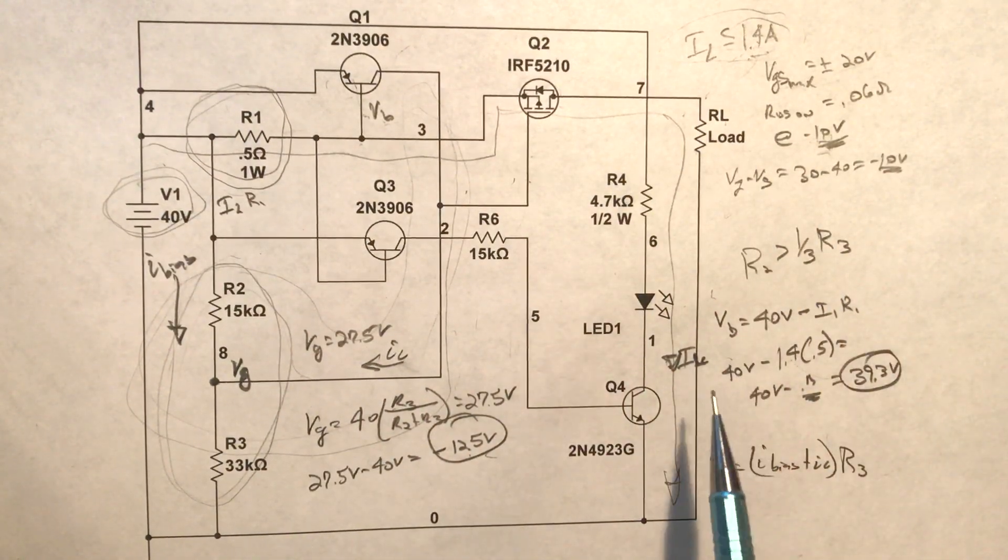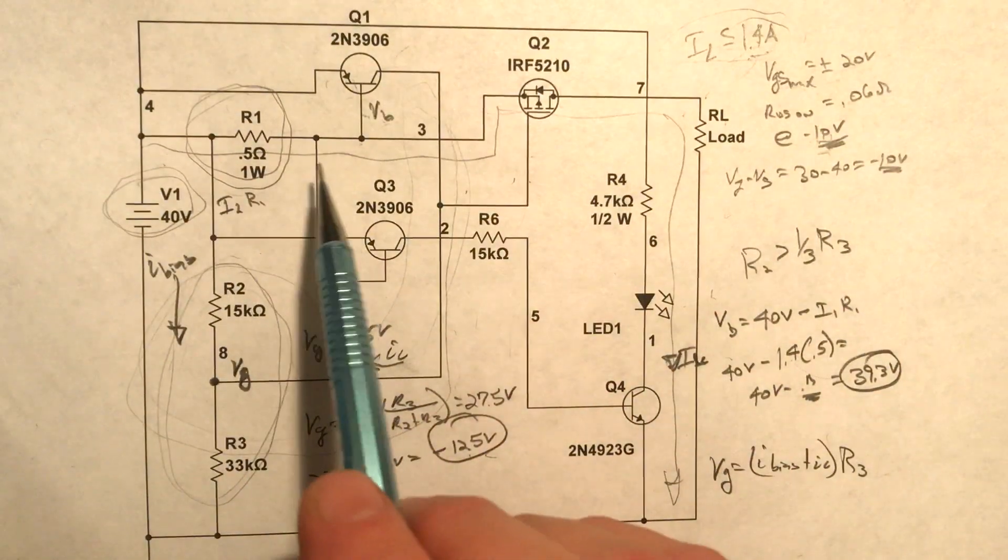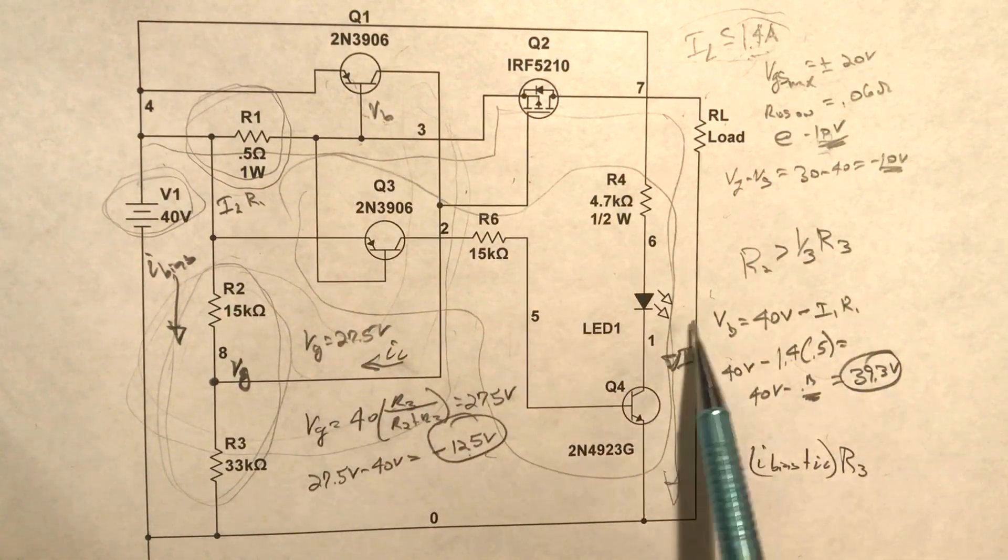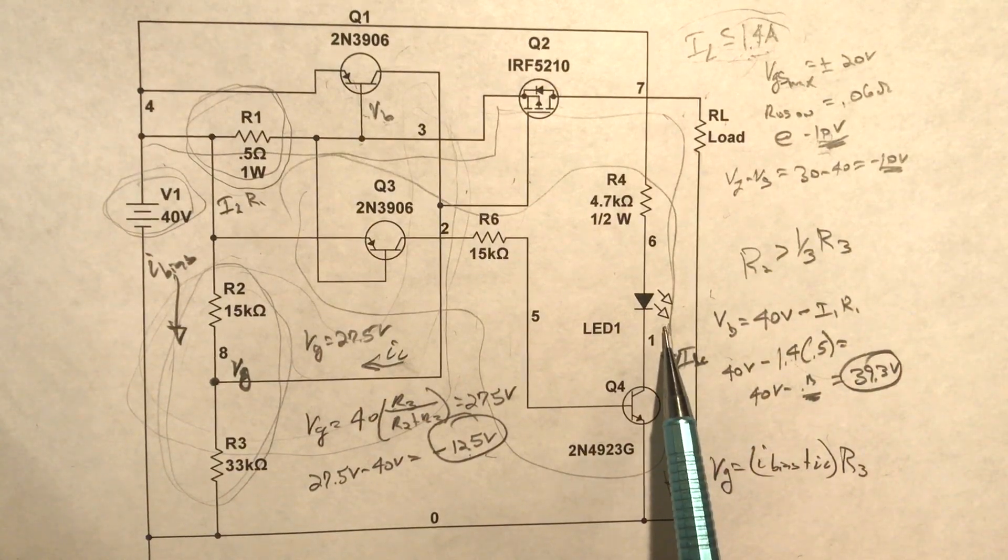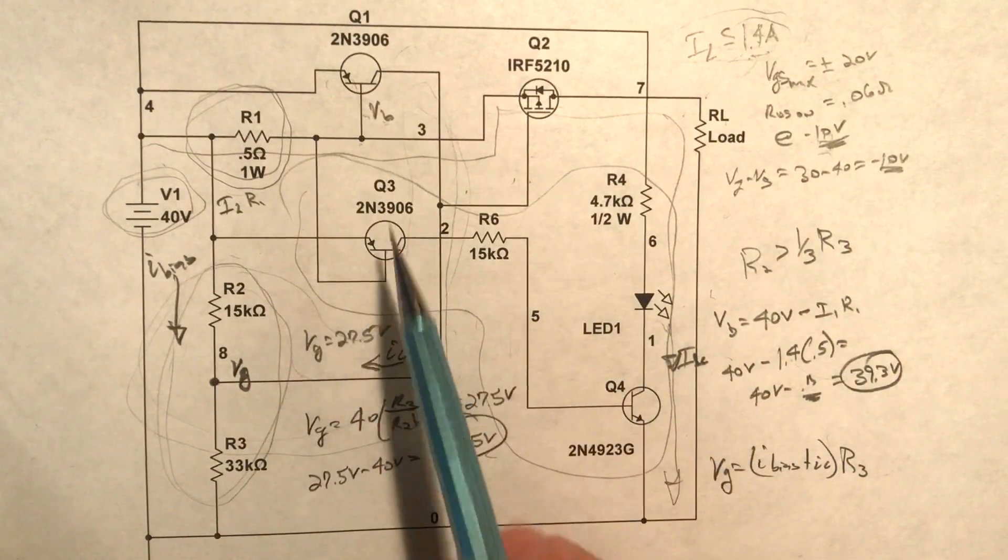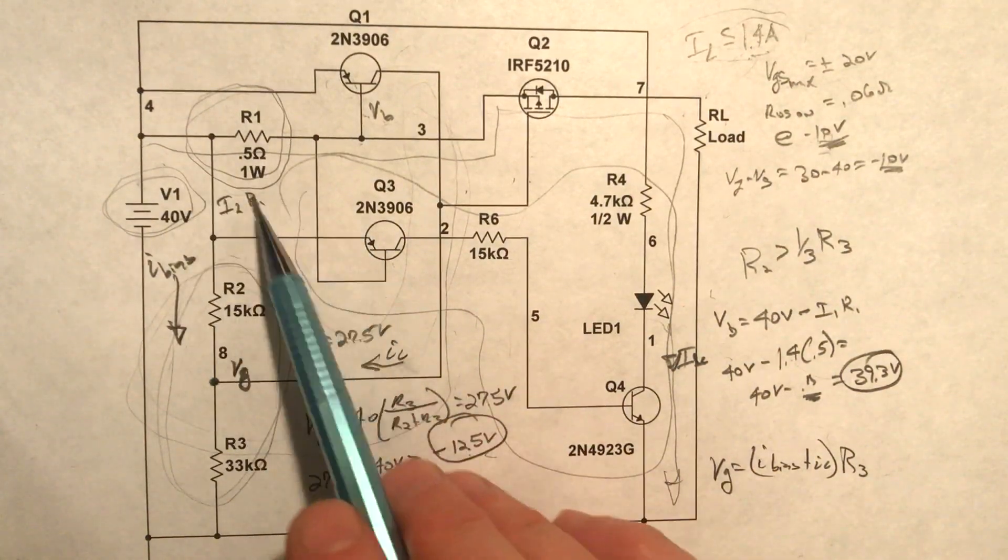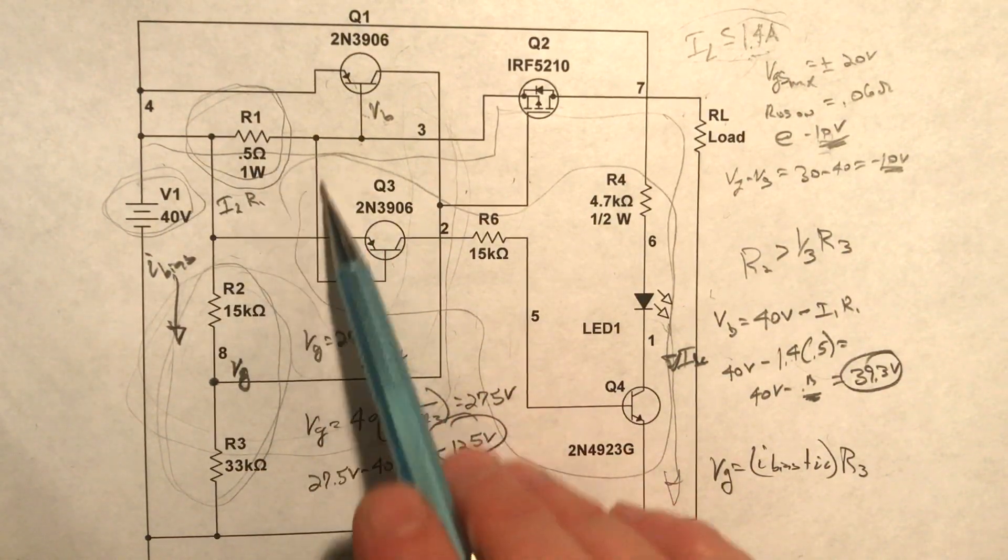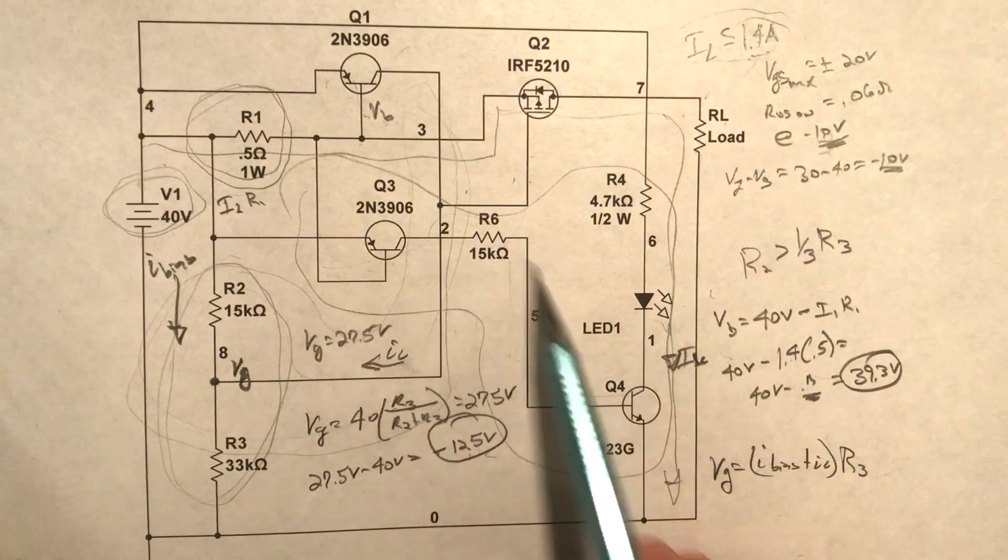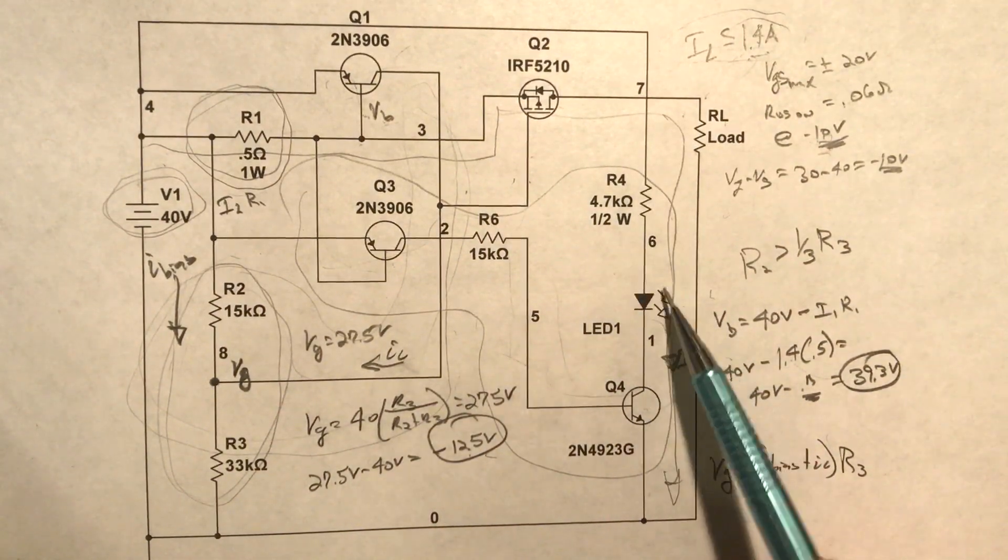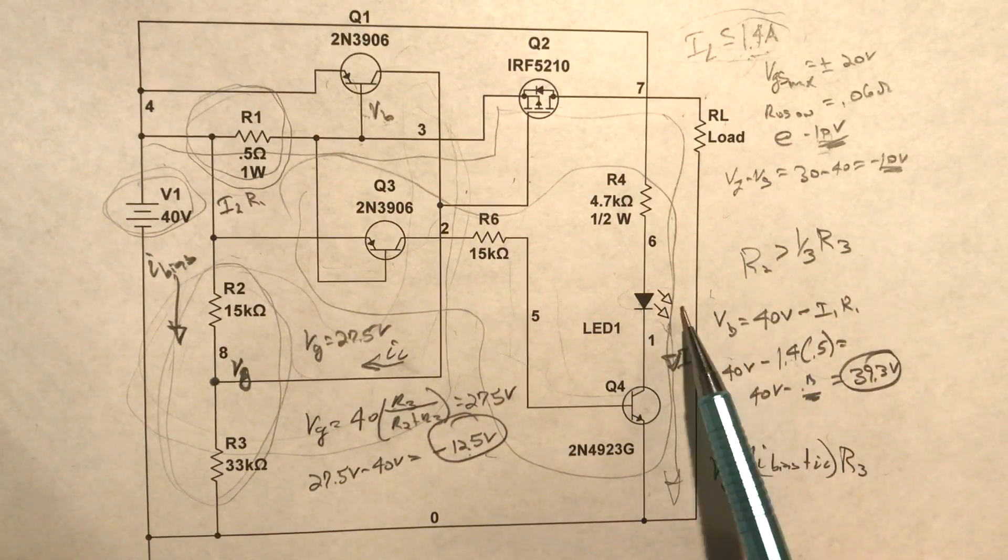The only other thing worth mentioning here is this little circuit and really all this is providing is an overcurrent indicator. We have the same 3906 configuration working across the sense resistor. As that drop gets to 0.7 volts, then this is going to conduct. When this conducts it's going to turn on this NPN transistor which is going to turn on this LED and indicate that we have an overflow condition.